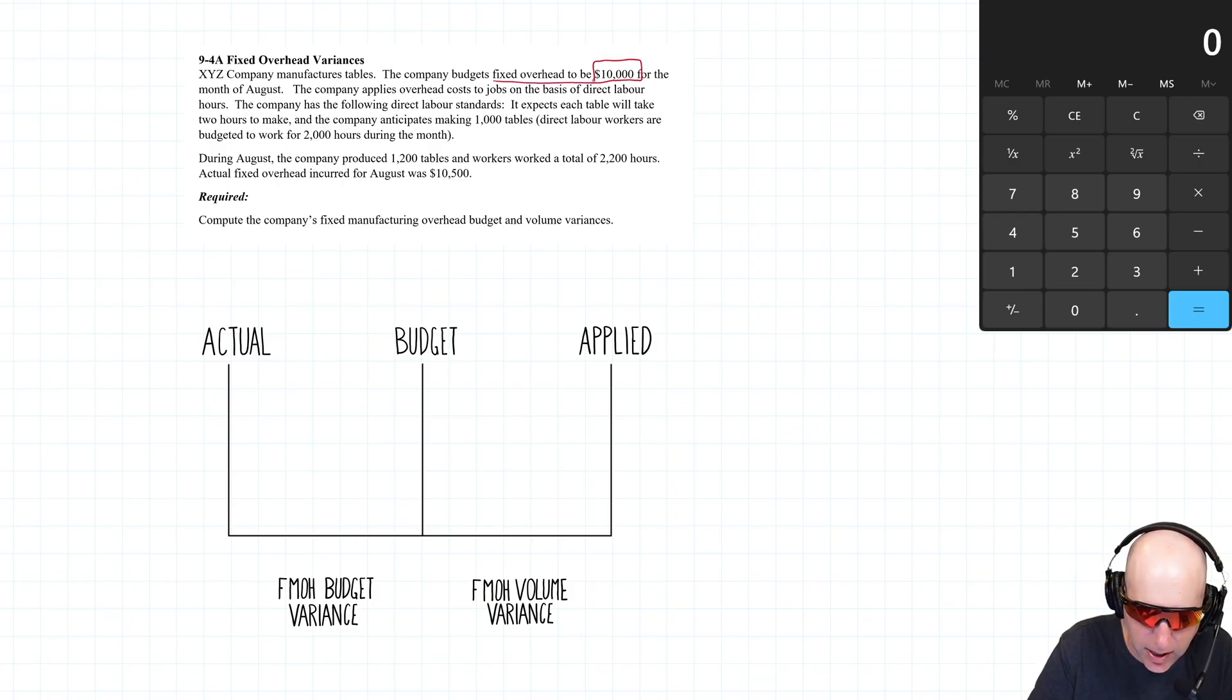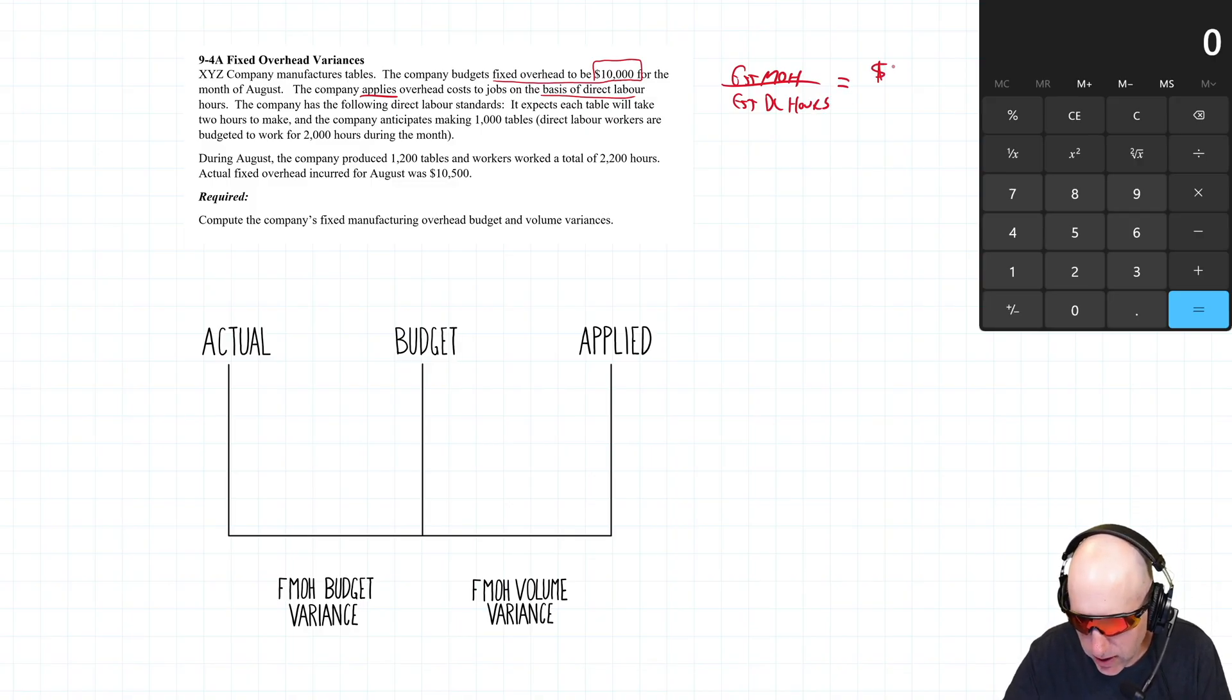It says estimated overhead is $10,000, it applies overhead on the basis of direct labor hours, so we're going to take our estimated overhead divided by our estimated direct labor hours, and that will be a useful number in the question. So we'll use it in a few minutes, but $10,000 is our estimated overhead. What is our estimated labor hours? I don't know, let's read on.